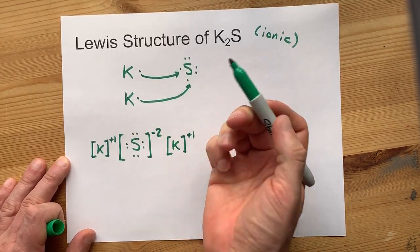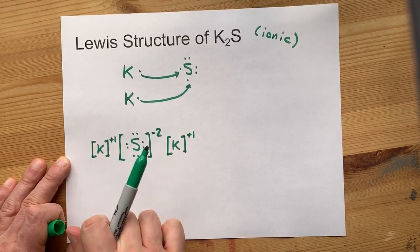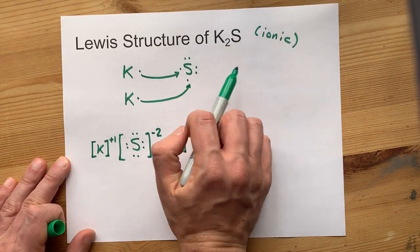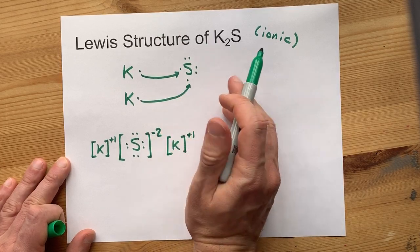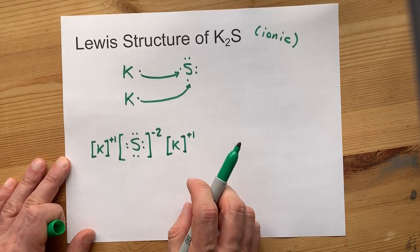You're going to have to write two of them down because you required two potassiums giving up their electrons to complete the octet here. By the way, two potassiums, one sulfur is where the formula comes from. You need two potassiums to satisfy the octet on a single sulfur.